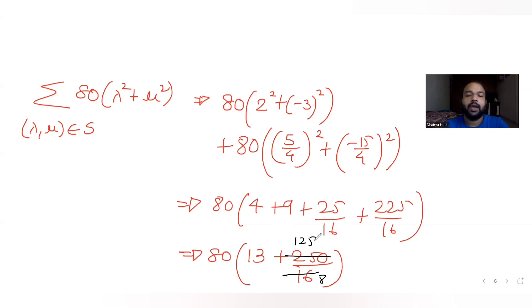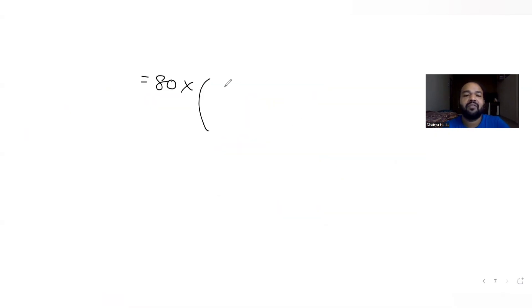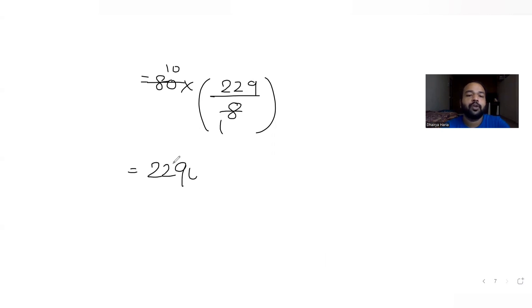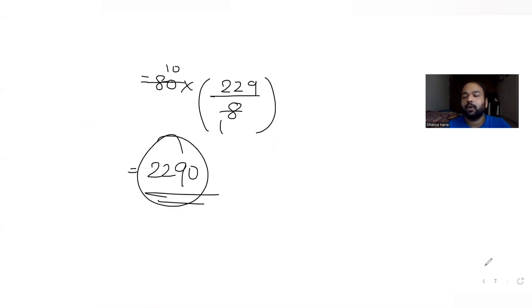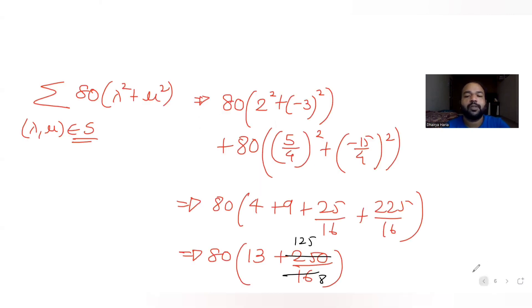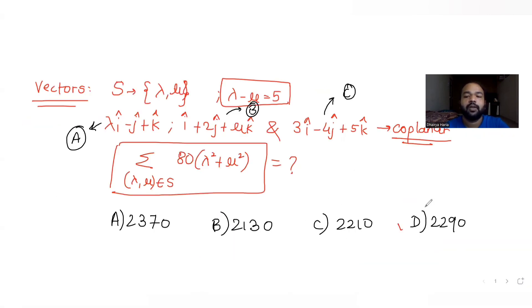Adding both cases: 1040 + 1250 = 2290. So the answer is 2290, which corresponds to option D. That is the correct answer for this question.